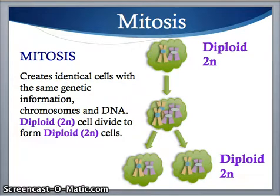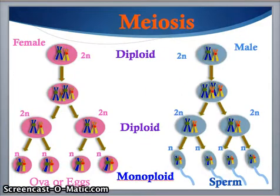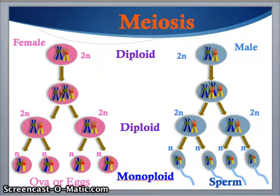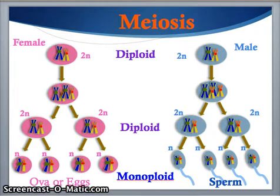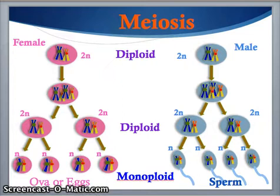This is not the case for meiosis. In meiosis, we start with the diploid number, double the chromosomes, and split back to the diploid number — but then we split a second time, giving us sperm and eggs with the monoploid number. So we go from 2n to 4n, back to 2n, and then split again to n. Because of this double split, we end up with four new cells instead of two.